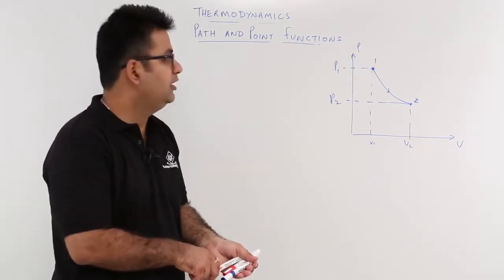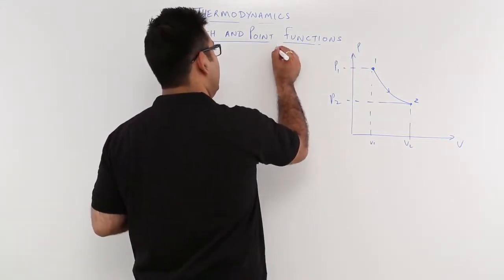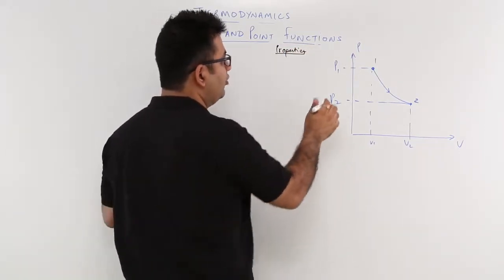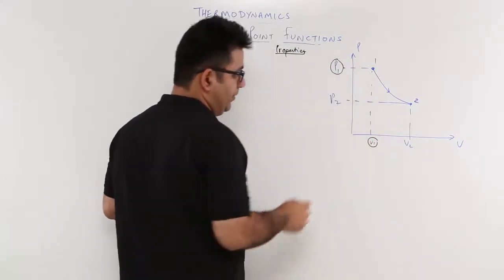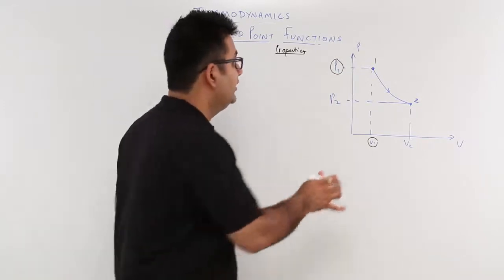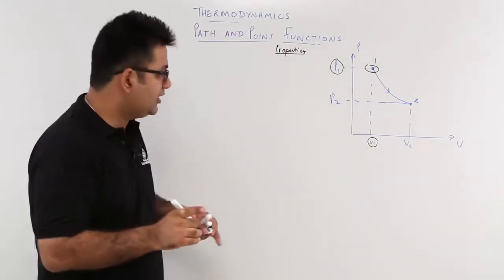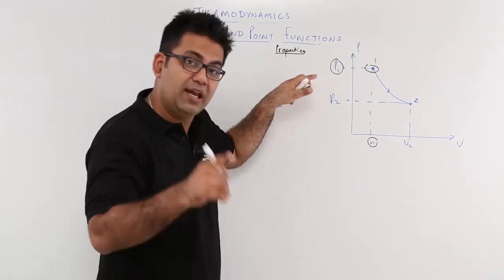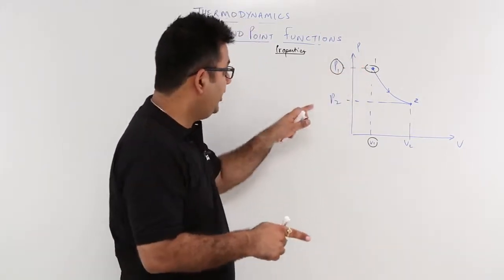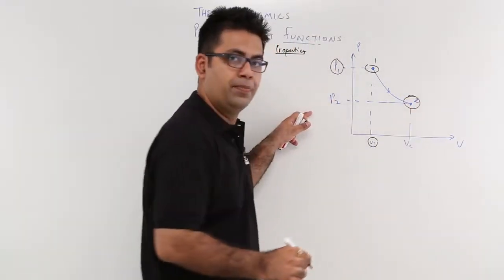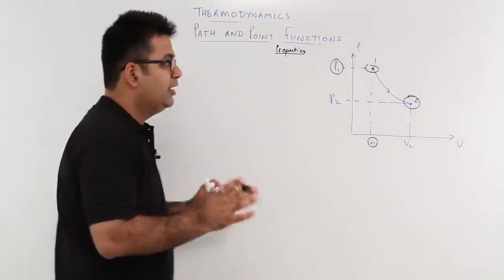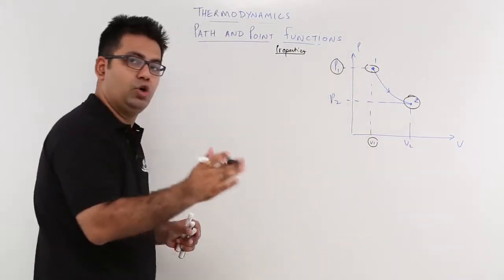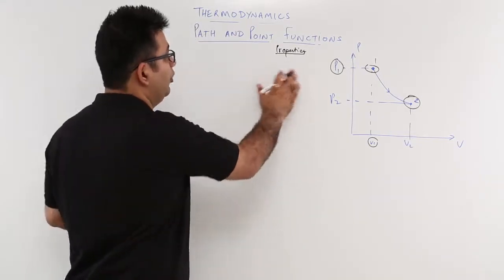If you talk about the functions, or properties — another word for functions is properties — if I talk about the property P1 and V1, it particularly depends upon state 1. This is a property which is only defined at this particular point. Similarly, P2 is only defined at state 2, and V2 is only defined at state 2. Those functions whose values depend upon those particular states or points are called point functions.